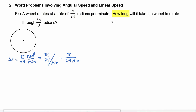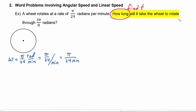The problem asks us how long — because 'how long' means it's asking us to find t. So: how long will it take the wheel to rotate through 3π/8 radians? The only variable with units of radians is θ, so we know θ = 3π/8 radians, which we can write simply as 3π/8.